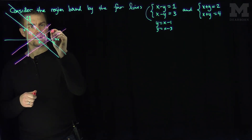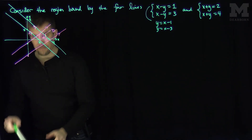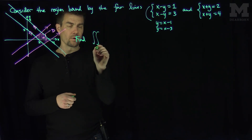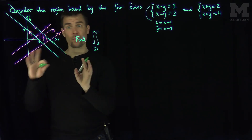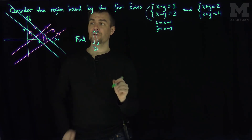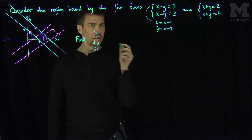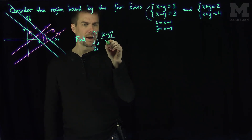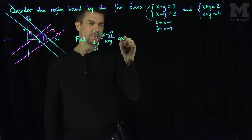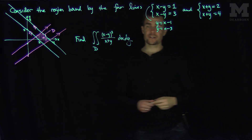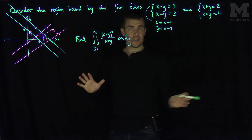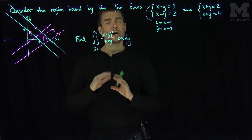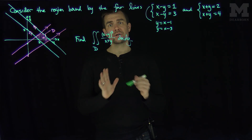Let's call this region d. What I'd like to find is the double integral over region d. It would be very complicated to parametrize this as a type one or type two region. So we'll integrate x minus y cubed over x plus y dx dy, and switch right away to the change of variable theorem.